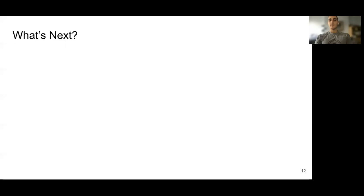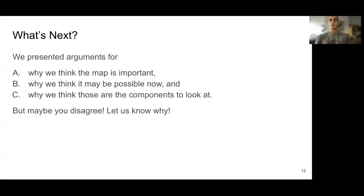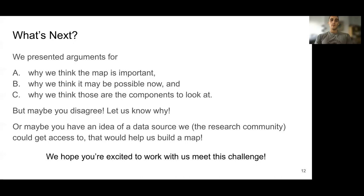So these are bold goals, and we've covered a lot of ground. We've presented our argument for why we think the map is important, why we think it may be possible now as opposed to before, and why we think the components of the map we presented are the key, valuable, yet achievable elements to focus on. But you may disagree — maybe you think a different component or granularity would be better to focus on, and we're excited to hear your ideas. Or maybe you have an idea of a valuable data source that the research community could get access to. Building a map will be hard, but our main goal here was to make you excited and willing to work with us to meet this challenge.